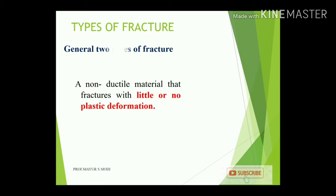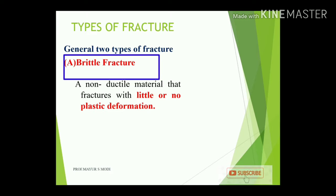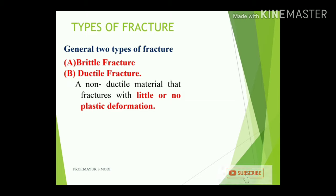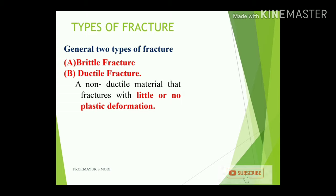There are generally two types of fracture: brittle fracture for brittle materials, and ductile fracture for ductile materials. Non-ductile or brittle materials fracture with little or no plastic deformation — there is no change in the physical dimension of the component before it separates into two or more parts. This is considered a brittle kind of fracture.